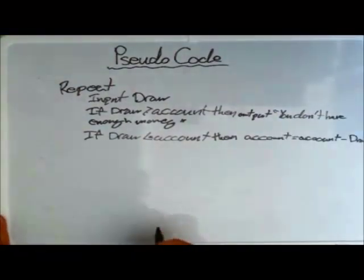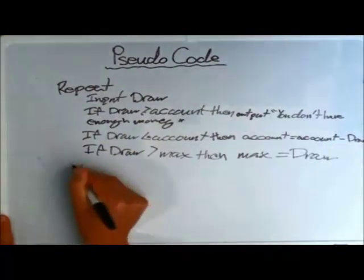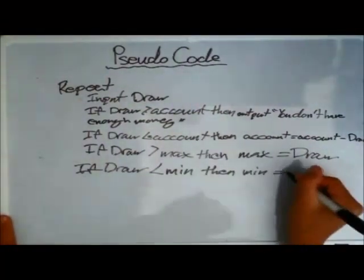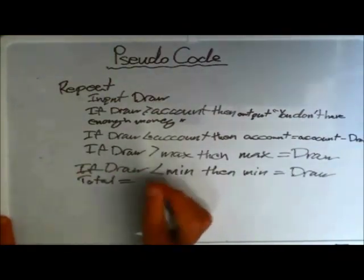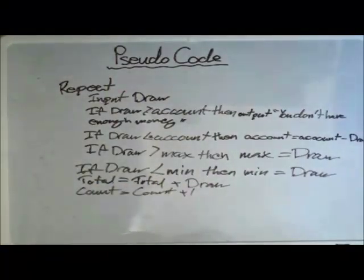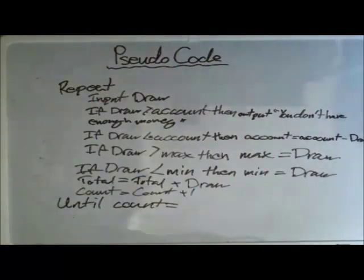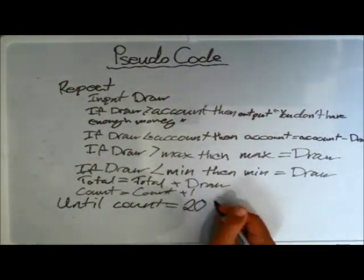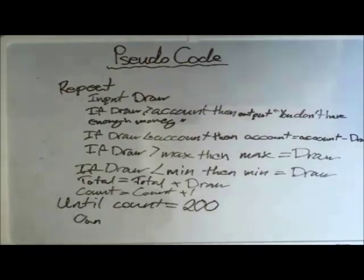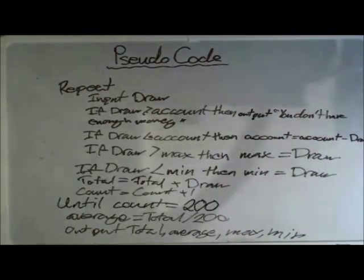So: REPEAT, then enter the code for the draw, max, and minimum checks — same logic as before. The difference is that we include count equals count plus one, like the WHILE DO WHILE loop. Then UNTIL count equals two hundred, because we loop two hundred times and set count to one at the beginning. If you set count to zero you'd go through the loop two hundred and one times, so count must start at one.